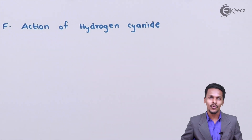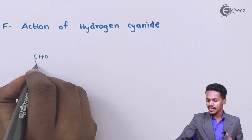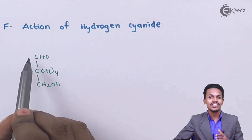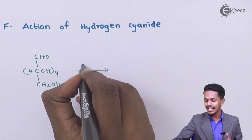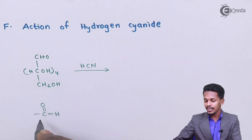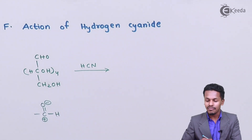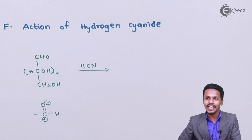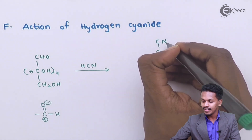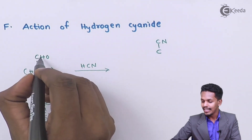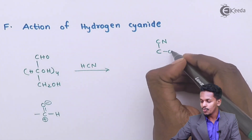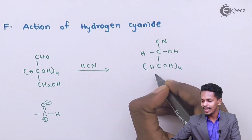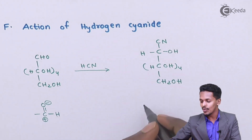The next reaction is the action of hydrogen cyanide on glucose. When glucose (CHO at top, down to CH2OH) is treated with HCN, the aldehyde carbon acquires a partial positive charge while oxygen acquires a negative charge. The cyanide group (CN–) attaches to the carbon and the hydrogen attaches to the oxygen. The product has CN and OH on the new carbon at the top, with CHOH four times and CH2OH below. The name of this product is glucose cyanohydrin.